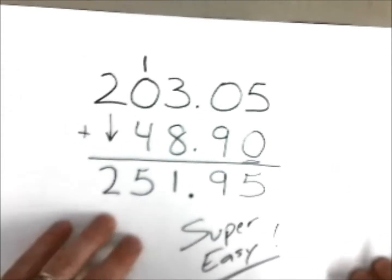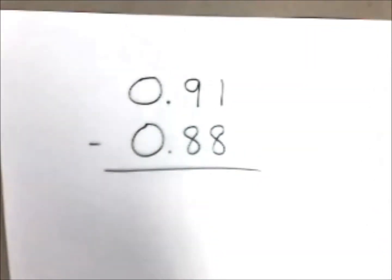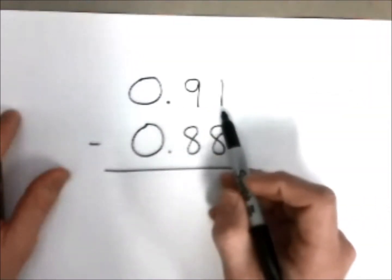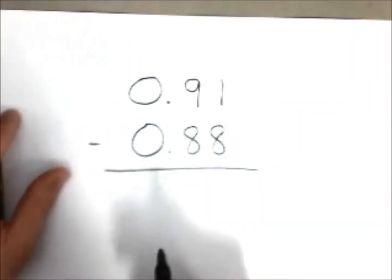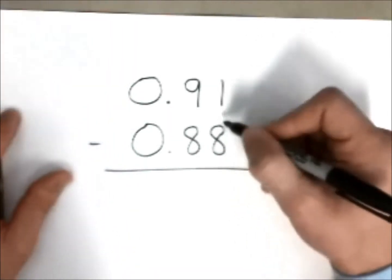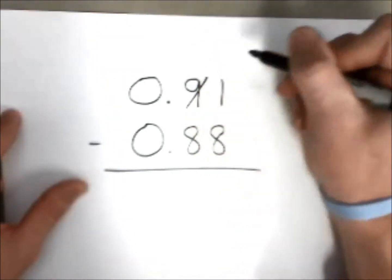And so now we move on to subtracting decimals. And once again, we're going to picture this as money if you will. And so we have 91 hundredths take away 88 hundredths. And immediately you'll notice, the farthest spot to the right, you cannot take eight from one.